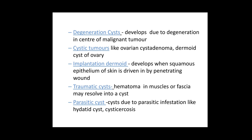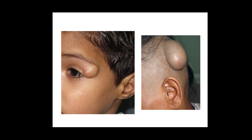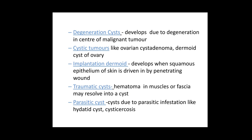Degenerative cysts are due to degeneration at the centre of a malignant tumour. Cystic tumours include tumours that are cystic in nature, like ovarian cystadenoma and dermoid cyst of the ovary. Implantation dermoid is an acquired dermoid cyst that develops when squamous epithelium of the skin is driven in by a penetrating wound like a thorn prick or needle prick. Traumatic cysts include haematoma in muscles or fascia which resolves into a cyst. Parasitic cysts are formed due to parasitic infestation, like hydatid cyst and cysticercosis.